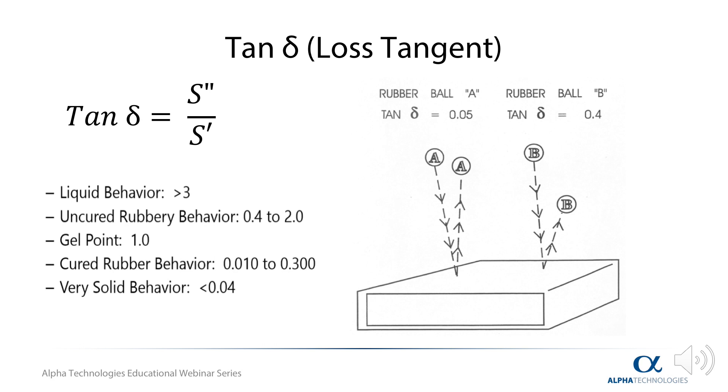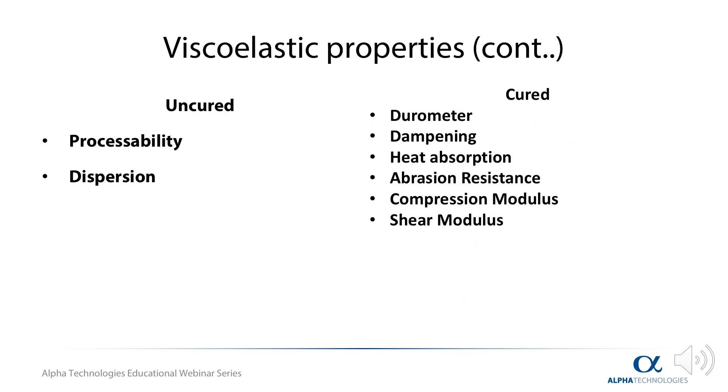In uncured materials, tan delta is a good predictor of downstream processability, in uncured mixed rubber stocks, as well as raw elastomers. Intuitively, materials with high tan deltas will be more difficult to process, as much of the applied energy will be lost to heat buildup.